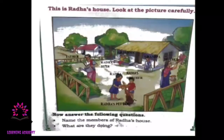Look at the picture — this is Rada's house. What do you find? You find father, you find grandma, and near to grandma there is Rada's sister. You can see grandpa, you can see mother, right near the garden. You can see Rada and Rada's brother; they are playing with their pet dog. So who are there in Rada's house?